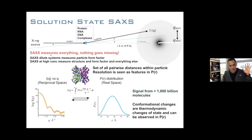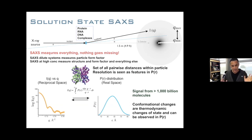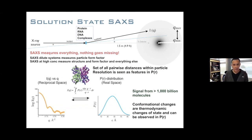SAXS is a measurement of two things — you're measuring your sample and your buffer, and you have to treat your buffer just as carefully as your sample. Your buffer has to be perfectly matched to the components with the exception of the particle being measured. When you subtract the two, you remove the contributions of the buffer.